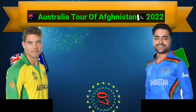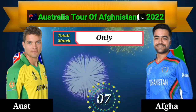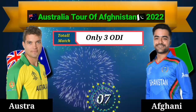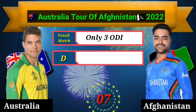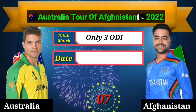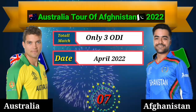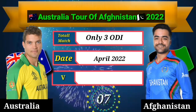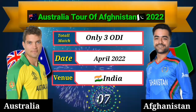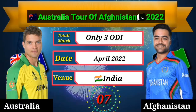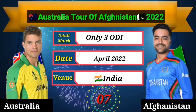Australia Cricket Team Upcoming Series No. 7: Australia Tour of Afghanistan 2022, total matches only 3 ODI series, date April 2022, venue: India.